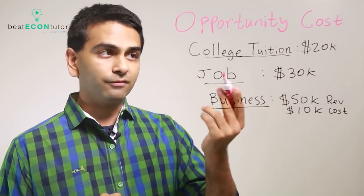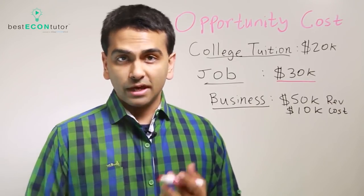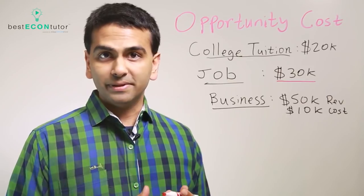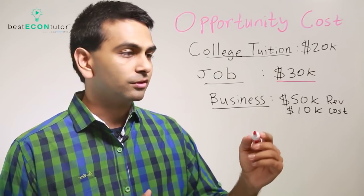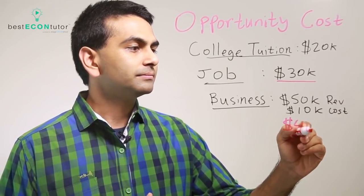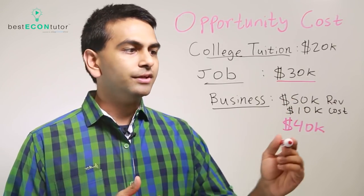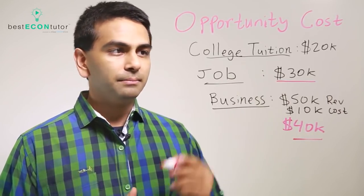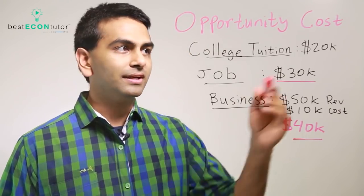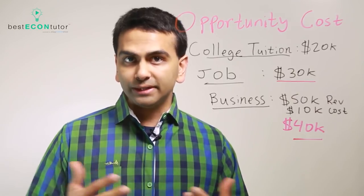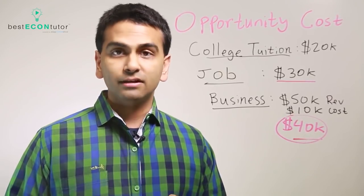Alternative one to going to college is having a job, so that's a $30,000 value. The other alternative is starting your own business, and that has a net value — meaning how much you could get out of that after your costs — of $40,000, because you have $50,000 in revenues but you spend $10,000. So while your physical cost of going to college is the $20,000 tuition, your opportunity cost — the net value of the next best alternative — would be $40,000.